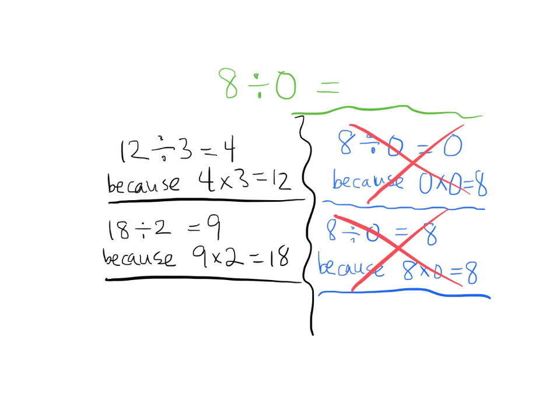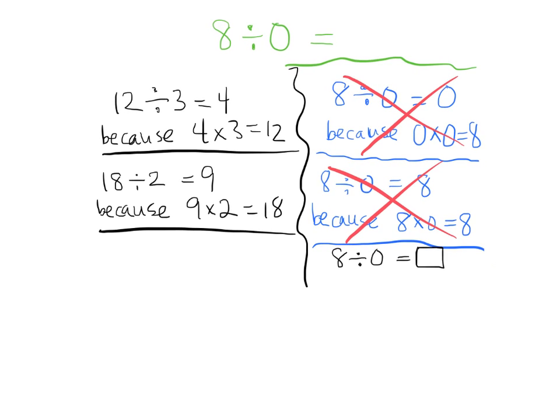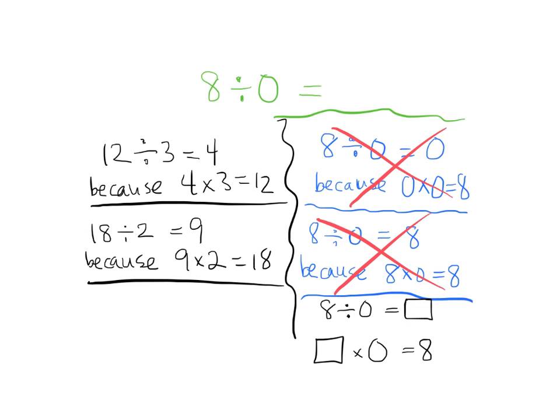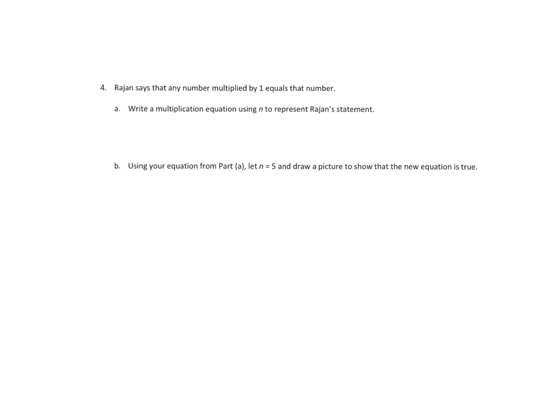So, the idea would be, if 8 divided by 0 equals something, basically that means something times 0 has to equal 8. Well, that's impossible. You can't do something times 0 to equal 8. There is nothing times 0 that will equal 8. Because when you multiply by 0, you always get 0. You can never get 8. So that's why you're never, ever allowed to divide by 0. This is called the null set, or sometimes we say null, or sometimes we use these empty brackets. But the idea is, 8 divided by 0 is impossible. You're not allowed, there is no answer for 8 divided by 0.